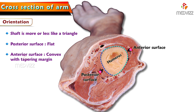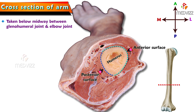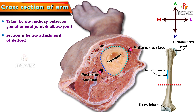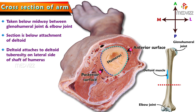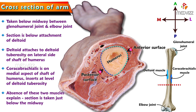The shaft of the humerus helps us to understand which is anterior and posterior, lateral and medial side. This cross section is taken below the midway between the glenohumeral joint and elbow joint to show the compartments of arm. We can identify the section is taken below midway because it is below the attachment of deltoid — here in the specimen we cannot see the deltoid. The deltoid attaches to the deltoid tuberosity on the lateral side of the shaft of humerus, and the coracobrachialis is on the medial aspect, inserting at the level of deltoid tuberosity. Absence of these two muscles explains that this section is taken just below the midway.